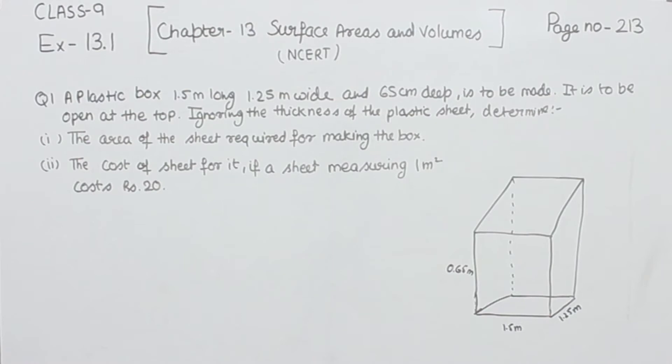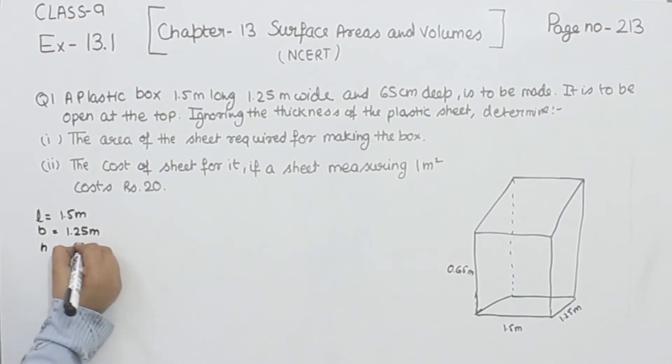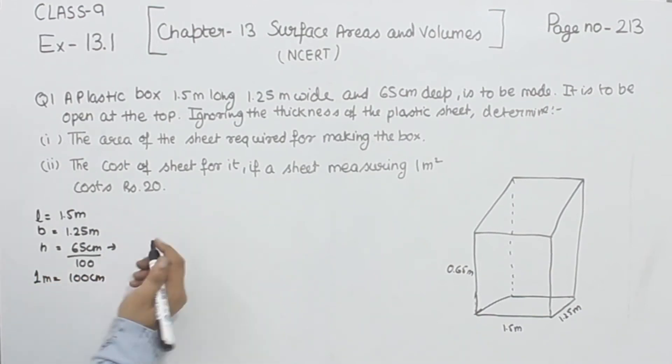First, we are going to find the area of the sheet. For this, we have length equal to 1.5 meters, breadth equal to 1.25 meters, and height equal to 65 centimeters. This will be divided by 100 because 1 meter equals 100 centimeters, so we get 0.65 meters. This is the figure we are working with.